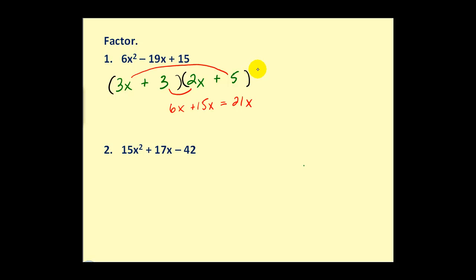Trial and error method means just try something different. Let's set this up again. I still like the factors of 6x² as 3x and 2x, but let's switch the 5 and the 3 around. Put the 5 here this time and the positive 3 here this time.